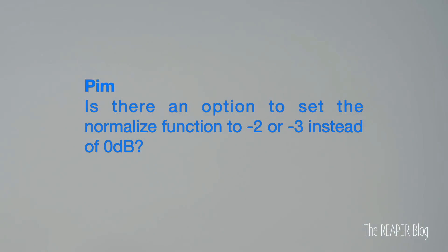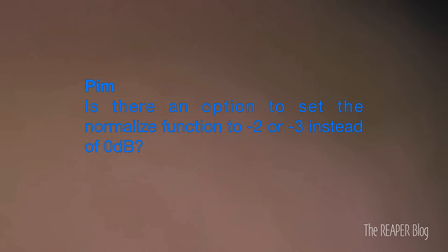Pim asks: is there an option to set the normalize function to minus two or minus three instead of zero dB? He's asking about the normalize function in item properties or the item context menu. There isn't a way to change it so it doesn't normalize to zero dBFS, but there are better actions available. With the SWS extensions installed, you can use the normalize loudness actions to set it to minus 23 LUFS or any value in LU or LUFS. There's also an SWS action to normalize selected takes to a specific decibel level, which is fully customizable. You can add these actions to the item context menu, a toolbar, or a keyboard shortcut.